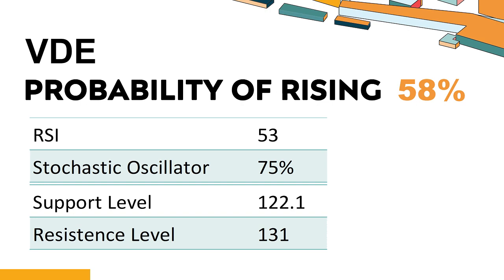The probability of VDE's share price rising is 58%. When the probability of rising is higher than 50%, it means that the stock has a higher chance of rising. Combining multiple technical analysis indicators, VDE has four bullish signals and three bearish signals.